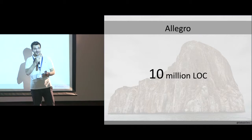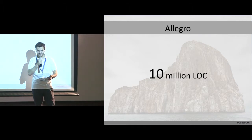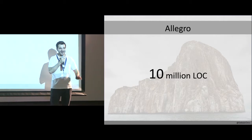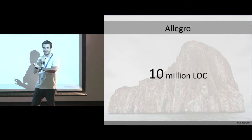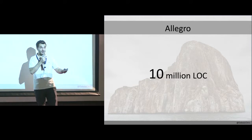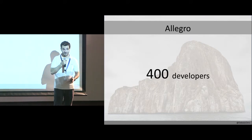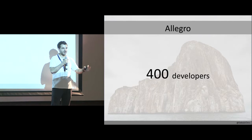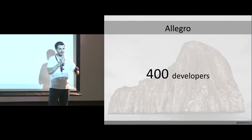Most of the code is written in PHP. Part of the code is written in NCC — we know there is C++, but most of our developers want to write in NCC where performance is needed. We have 400 developers, testers, and administrators, because we work in agile methodologies so we don't divide them into separate groups.